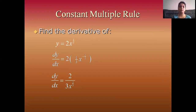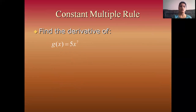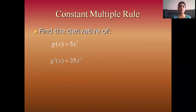Don't forget: here the value of N is 1/3, so we use the power rule. Second example: find the derivative of g(x) = 5x⁷. Apply derivative on both sides. g'(x): 5 is the constant, take 5 outside, and apply the derivative on x⁷. Using the power rule, the derivative of x⁷ is 7x⁶, and 7 times 5 is 35. So g'(x) = 35x⁶.